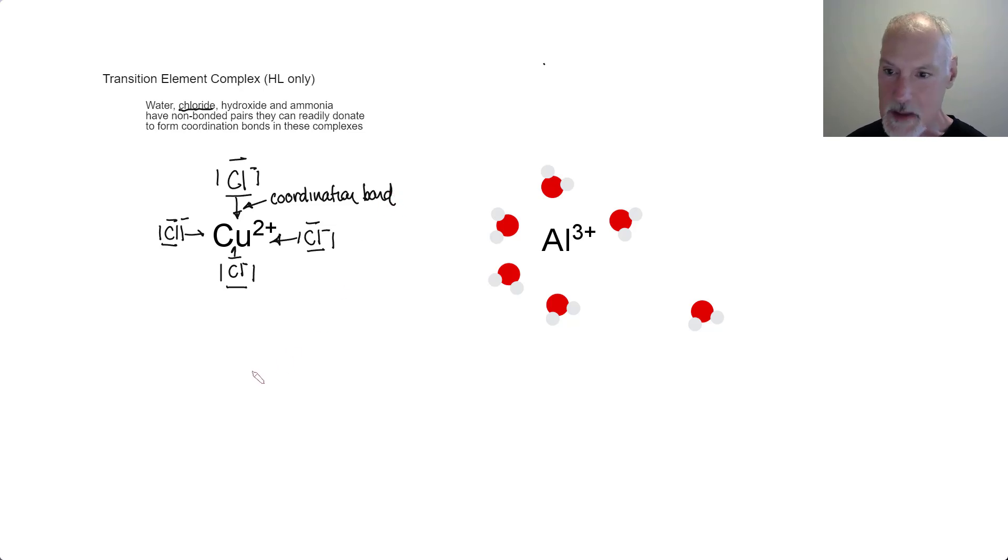Now to tidy this up into a proper Lewis structure, I'm going to put the copper here in the middle, and I'm going to show the chlorines and their unbonded electrons here.